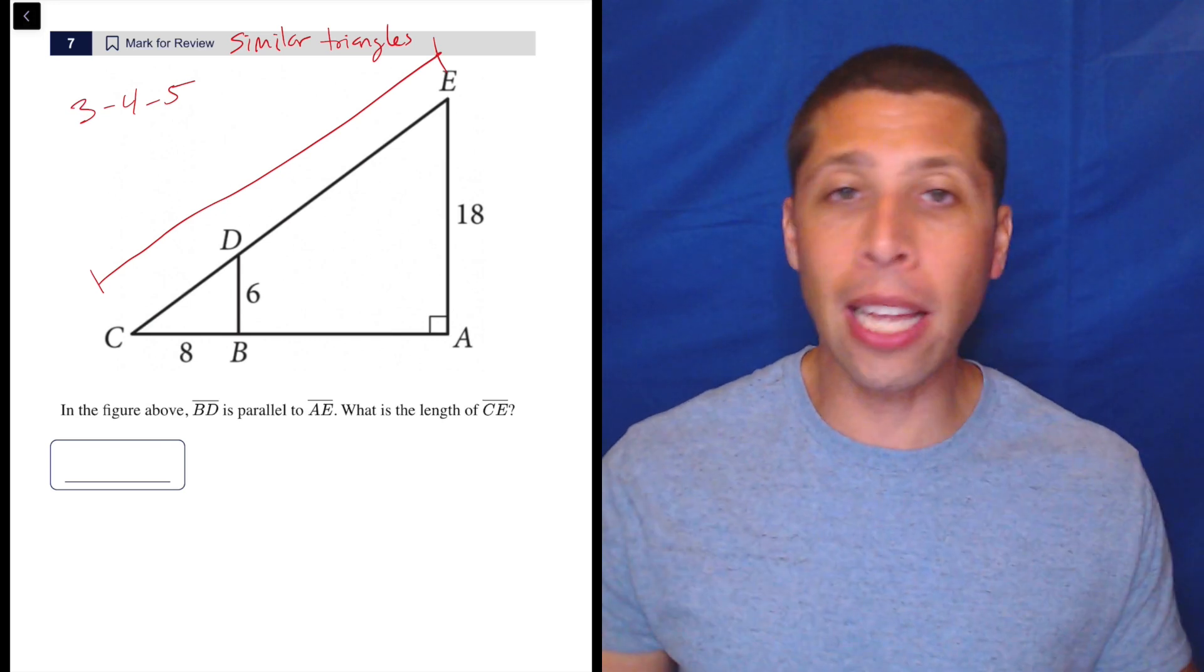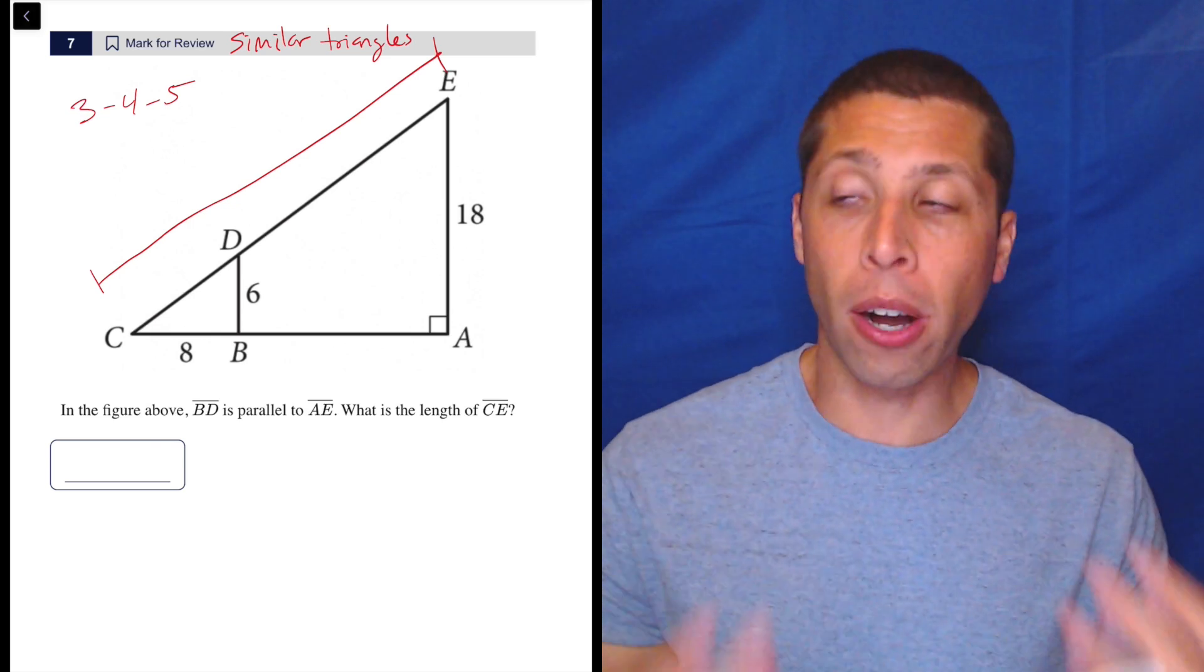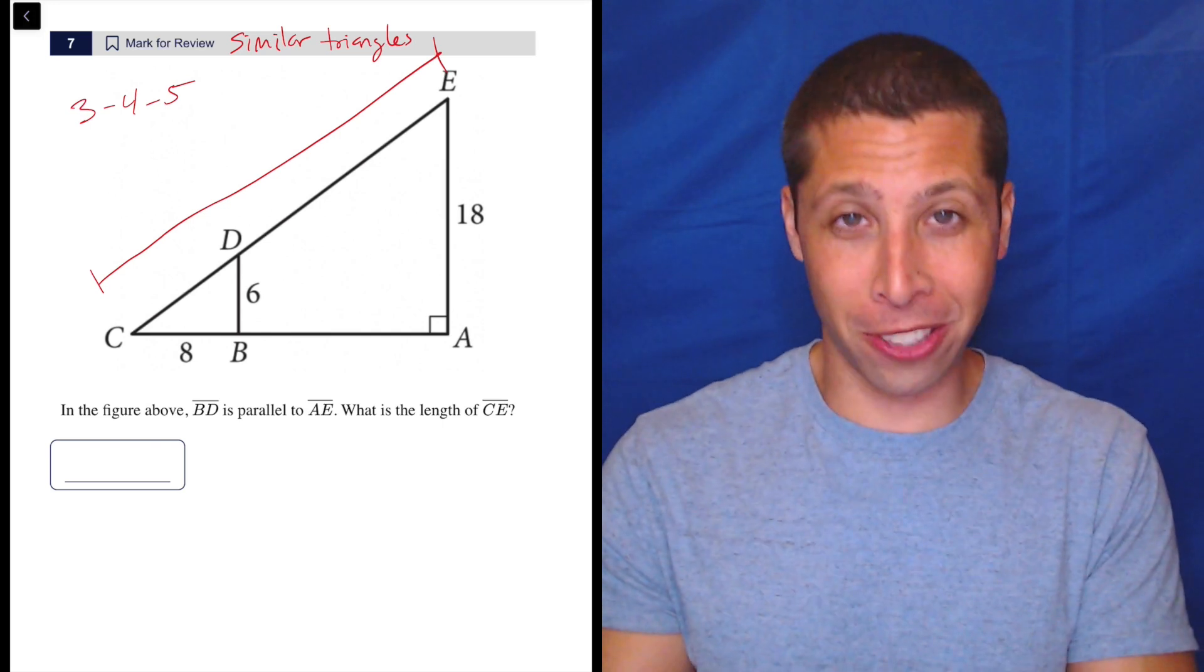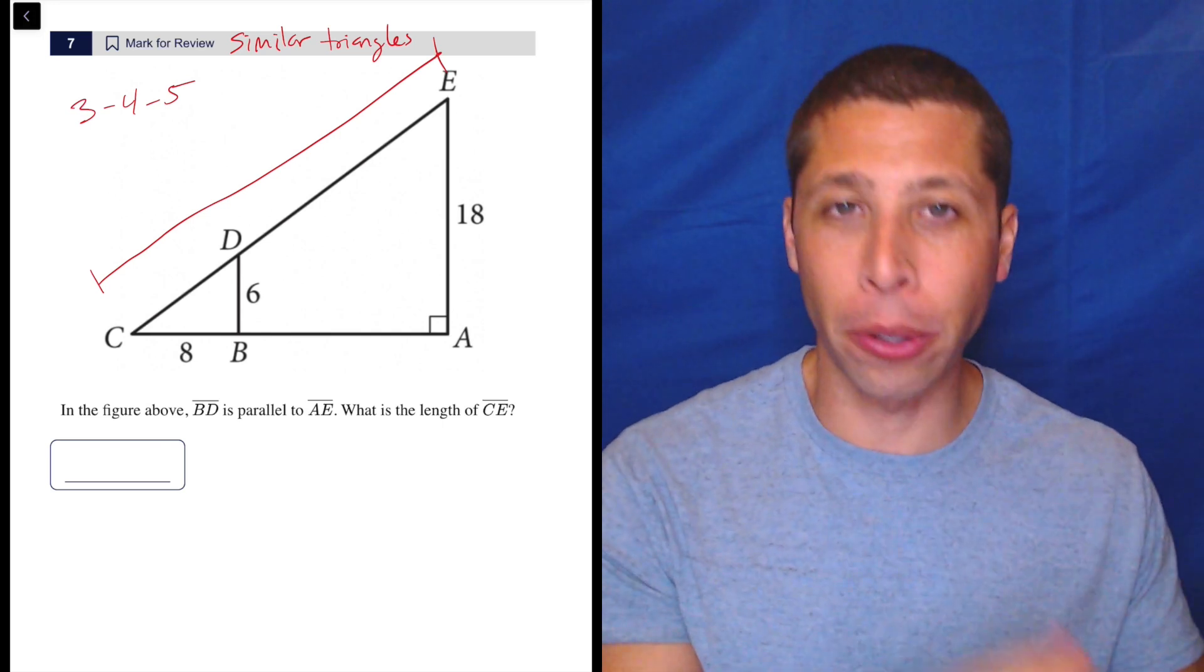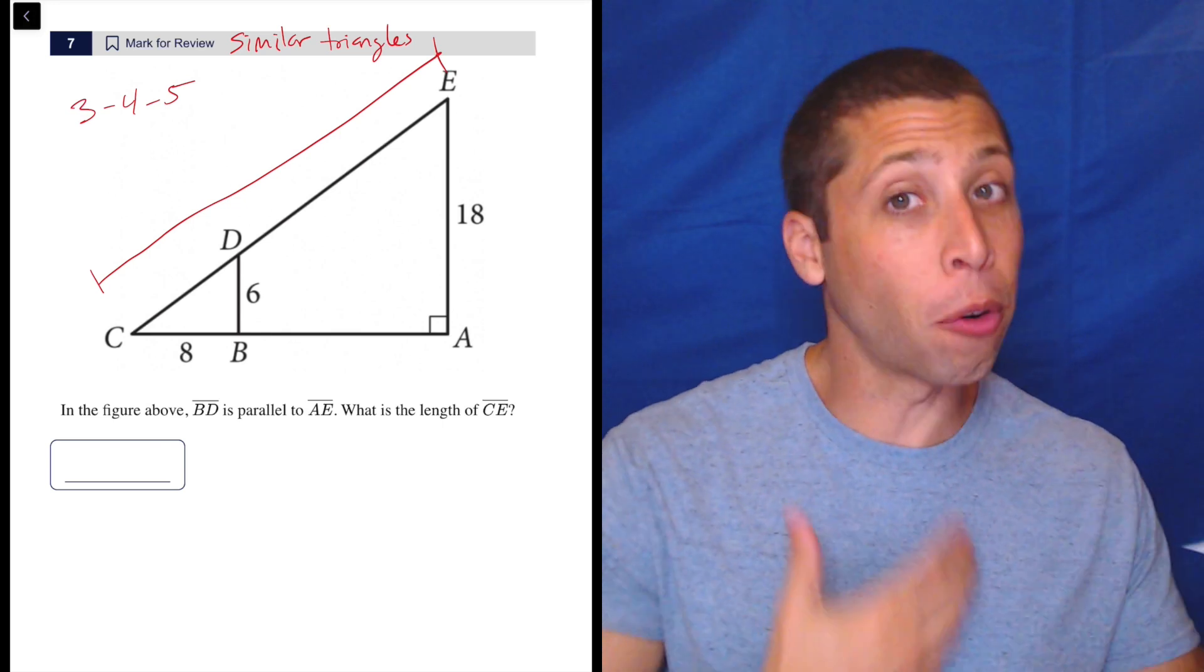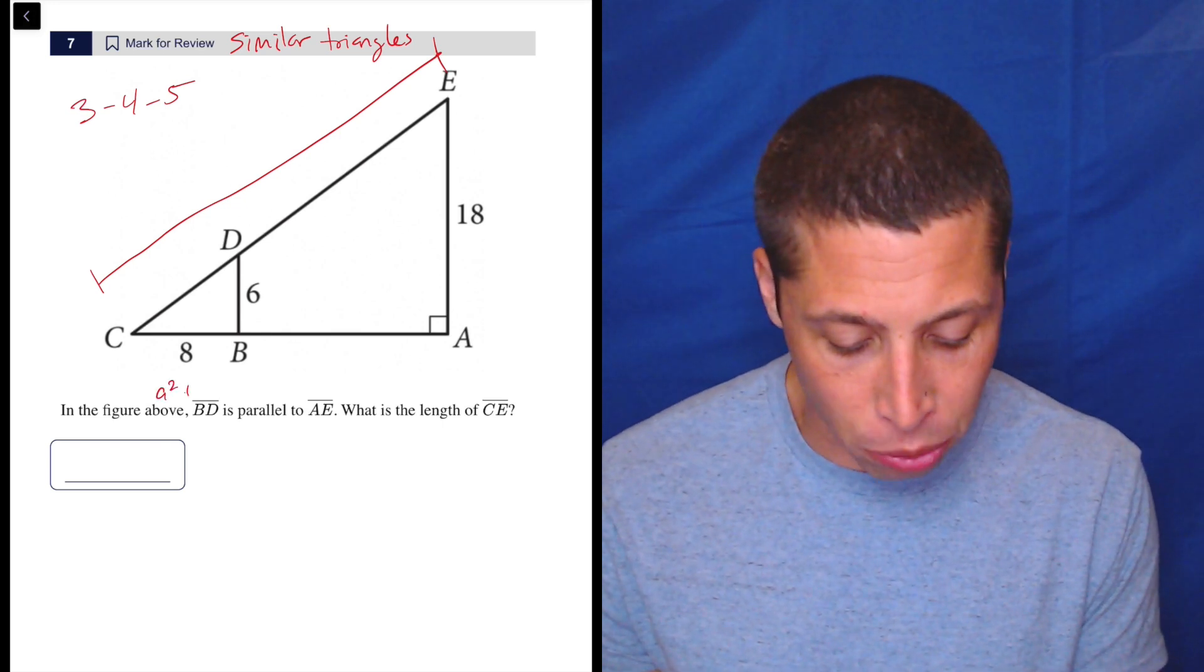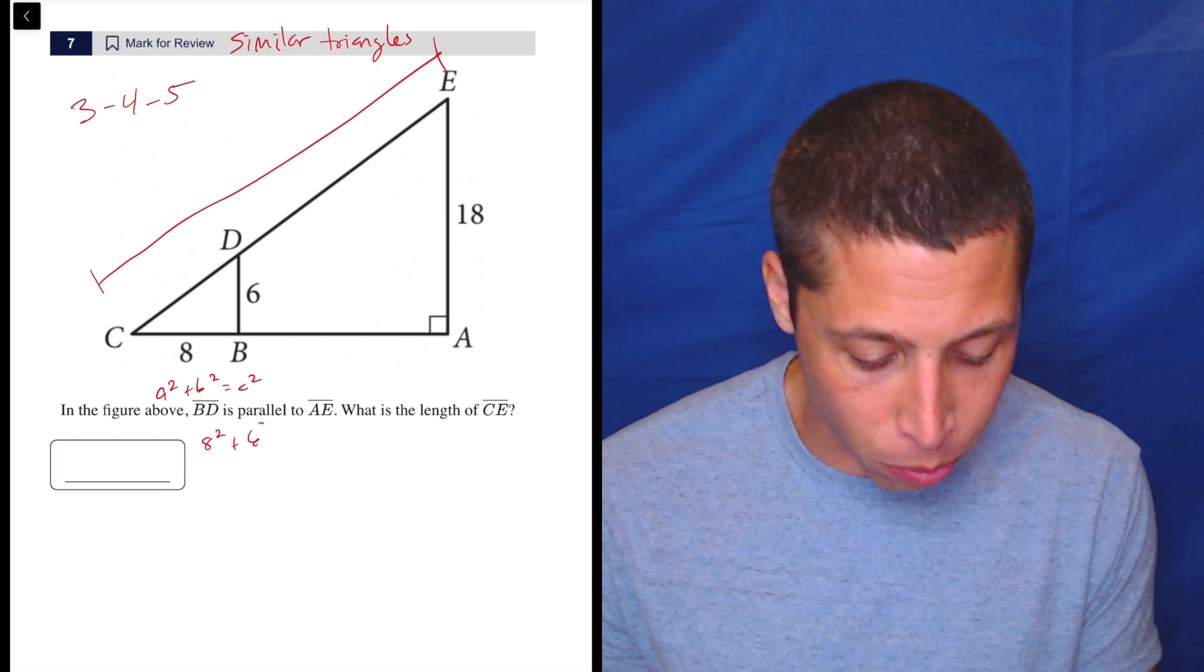The SAT loves it. They love it for questions like this. They love it for questions involving trigonometry because it is a great way of seeing who truly understands the geometry that they're doing versus who is more robotically going through the process. Now, don't get me wrong. If you robotically go through the process, you're going to do Pythagorean theorem right here. You're going to do A squared plus B squared is C squared. You'll do 8 squared plus 6 squared is